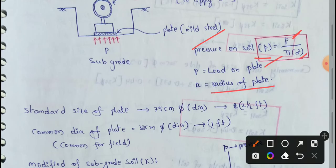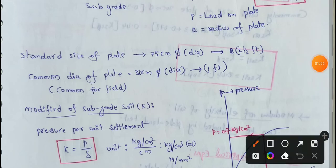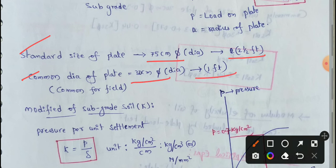Here, small 'a' means radius of the plate, and small 'p' means pressure on soil. The standard size of plate is 75 cm diameter, which is about 2.5 feet. The common diameter of plate used in the field is 30 cm, which equals 1 foot. Maximum 1-foot plate is used commonly in the field.